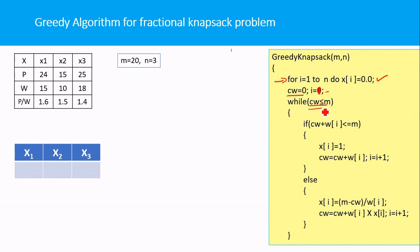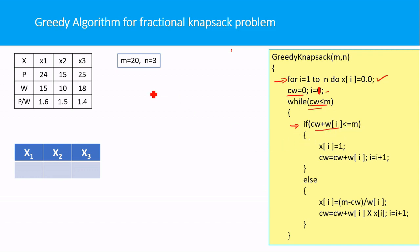I will repeat this while loop until the current weight becomes equal to the capacity of the knapsack. In this if statement I will check whether the current weight plus the next item's weight will be less than or equal to M.